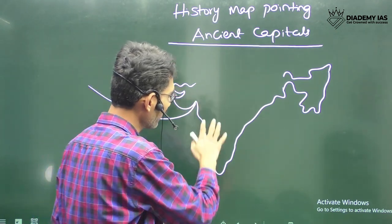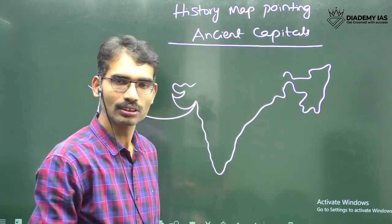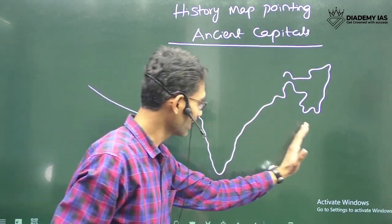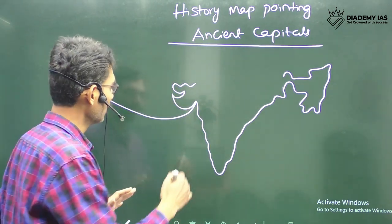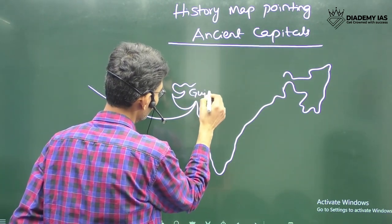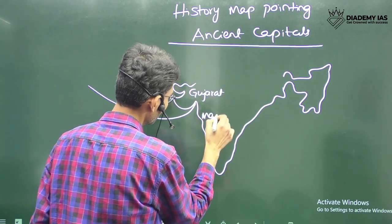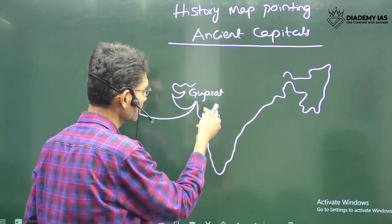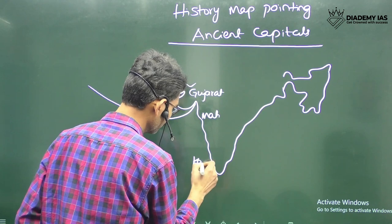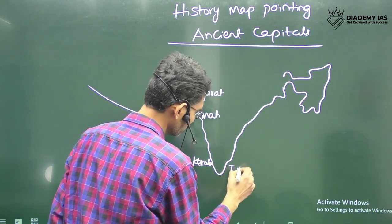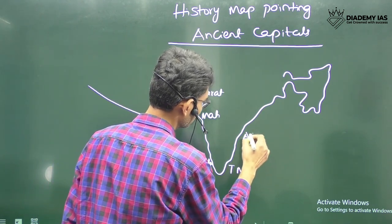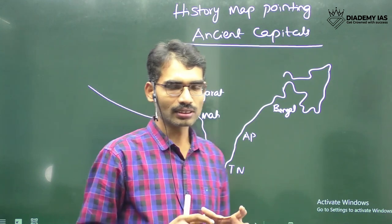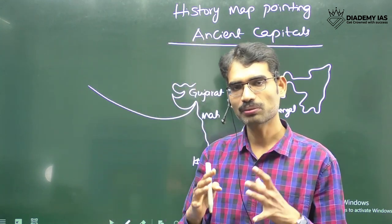Today we have many states sharing boundaries with the ocean — Bay of Bengal on one side and the Arabian Sea on the other. In Gujarat and Maharashtra we have important ports. With respect to ancient times, some important ports in Gujarat, Maharashtra, and Kerala — and also Tamil Nadu, Andhra Pradesh, and Bengal — are located in these areas.